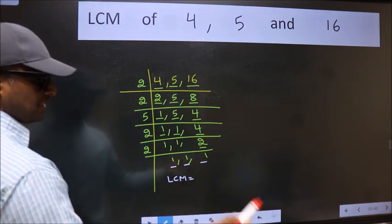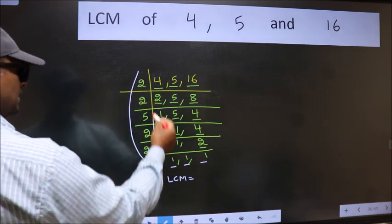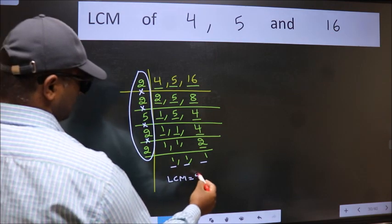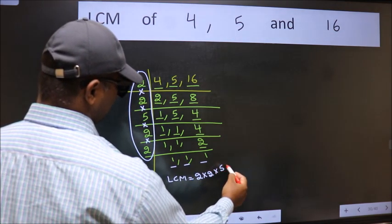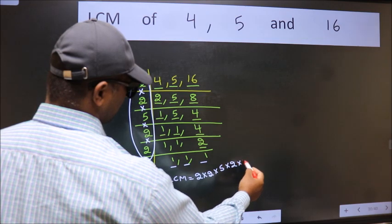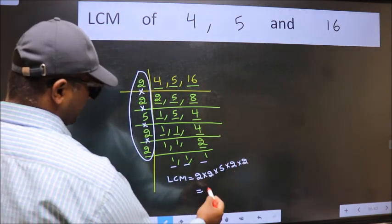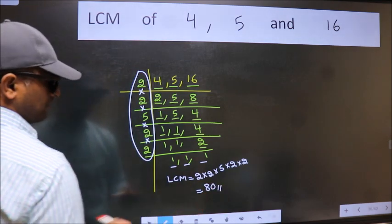The LCM is the product of these numbers, that is 2 into 2 into 5 into 2 into 2. When we multiply these numbers we get 80, our LCM.